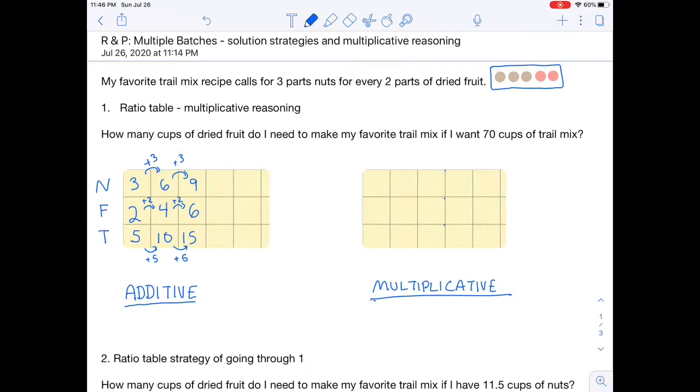I'll set up my table in the same way to use multiplicative reasoning with nuts, fruit, and total amount of trail mix. Three cups of nuts to two cups of fruit will give me five cups of trail mix. My goal is to say what number can I multiply by five that will get me to 70. Off the top of my head I'm not sure, so I'm going to go with an intermediate. I'm going to take five times two to get 10.